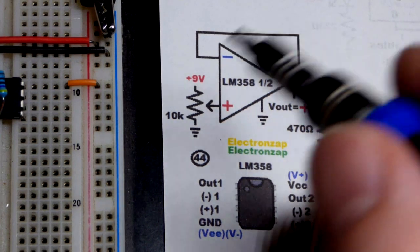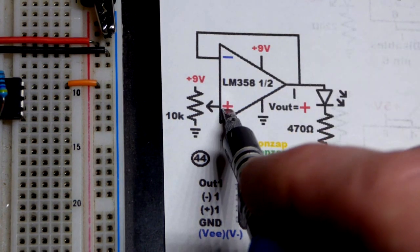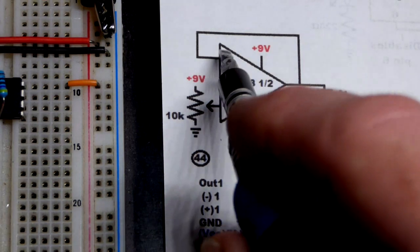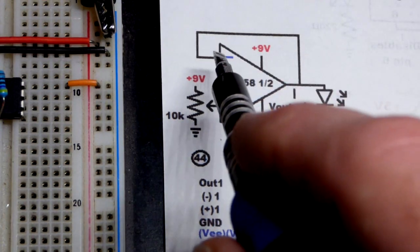So there you can see the schematic. We got the feedback. Whenever this voltage, the plus voltage is higher than the minus voltage, the output voltage rises. Once they equal, it stops.